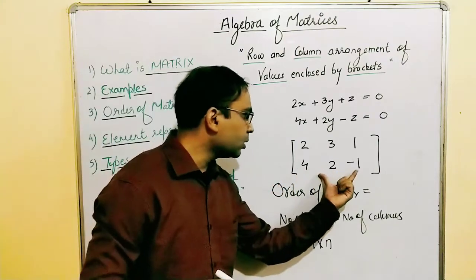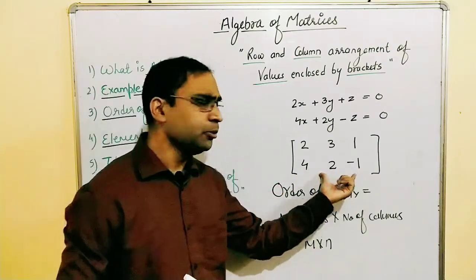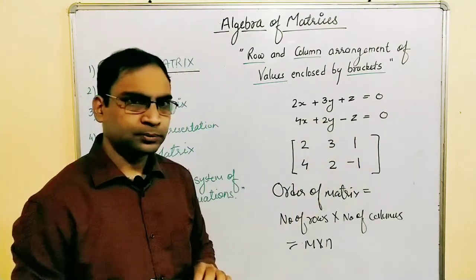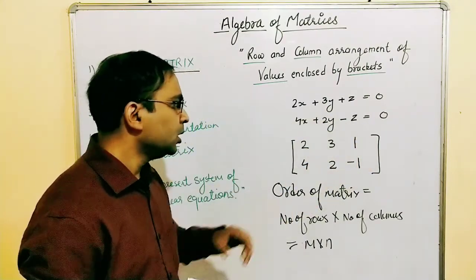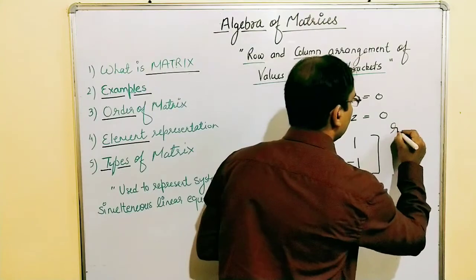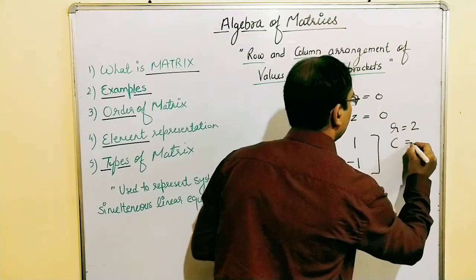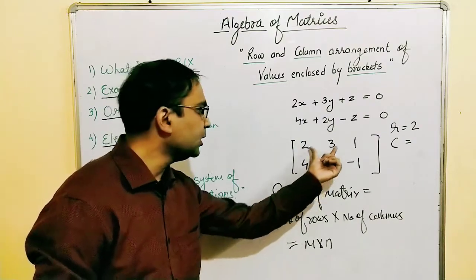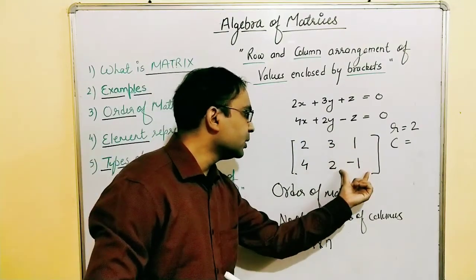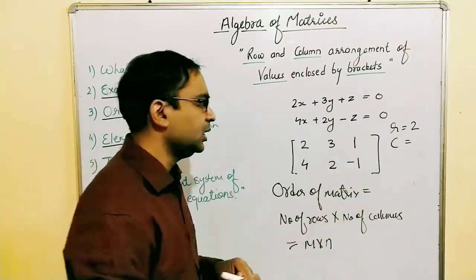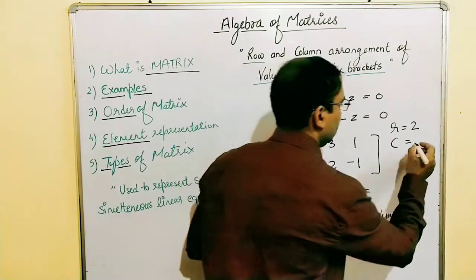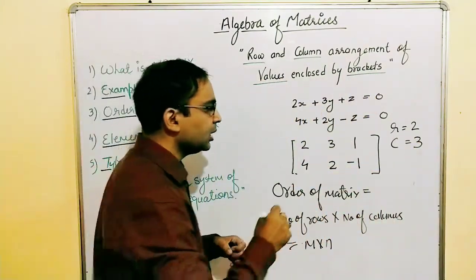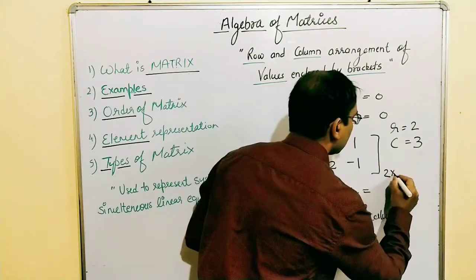Let's identify the order of this matrix. How many rows? We have two rows. How many columns? Looking vertically: column one, column two, column three — we have three columns. So what will be the order of this matrix? The order will be 2 × 3. So the order of this matrix is 2 × 3.